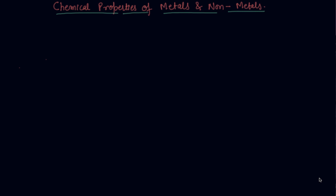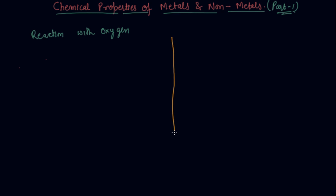Hello students, my name is Sumit Mehta. Today in this lecture we will discuss chemical properties of metals and non-metals — this is part one of the video. I am starting with reaction with oxygen. I will test both metals and non-metals and show how metals react differently with oxygen and how non-metals react differently with oxygen. On one side I will take the example of metals, and on the other side non-metals, so it should be clear how each reacts with oxygen.